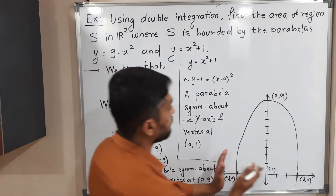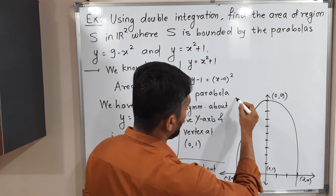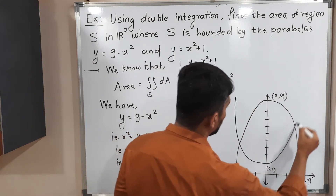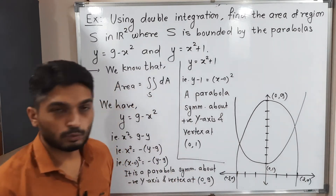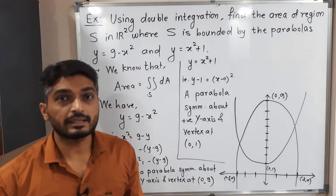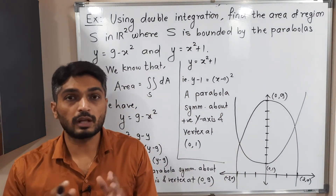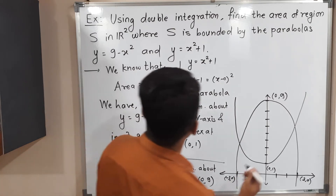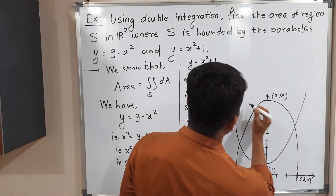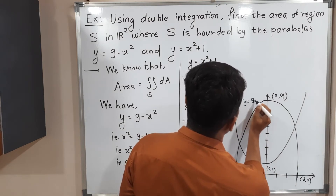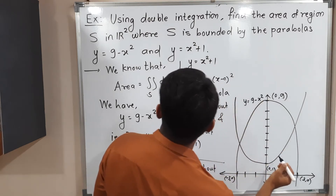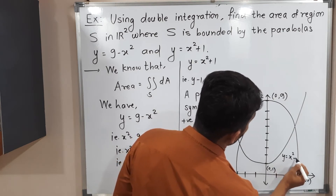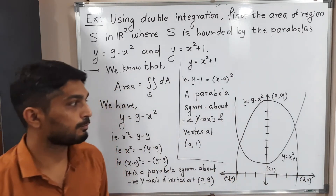The parabola opens in the upward direction. Here is the rough sketch of the second parabola. These two parabolas intersect each other at two distinct points. The equation of the first parabola is y = 9 minus x squared and the equation of the second is y = x squared plus 1.